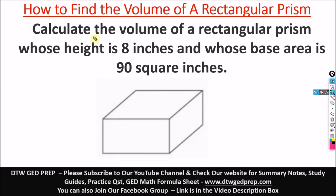We're going to work through this question: Calculate the volume of a rectangular prism whose height is 8 inches and whose base area is 90 square inches.